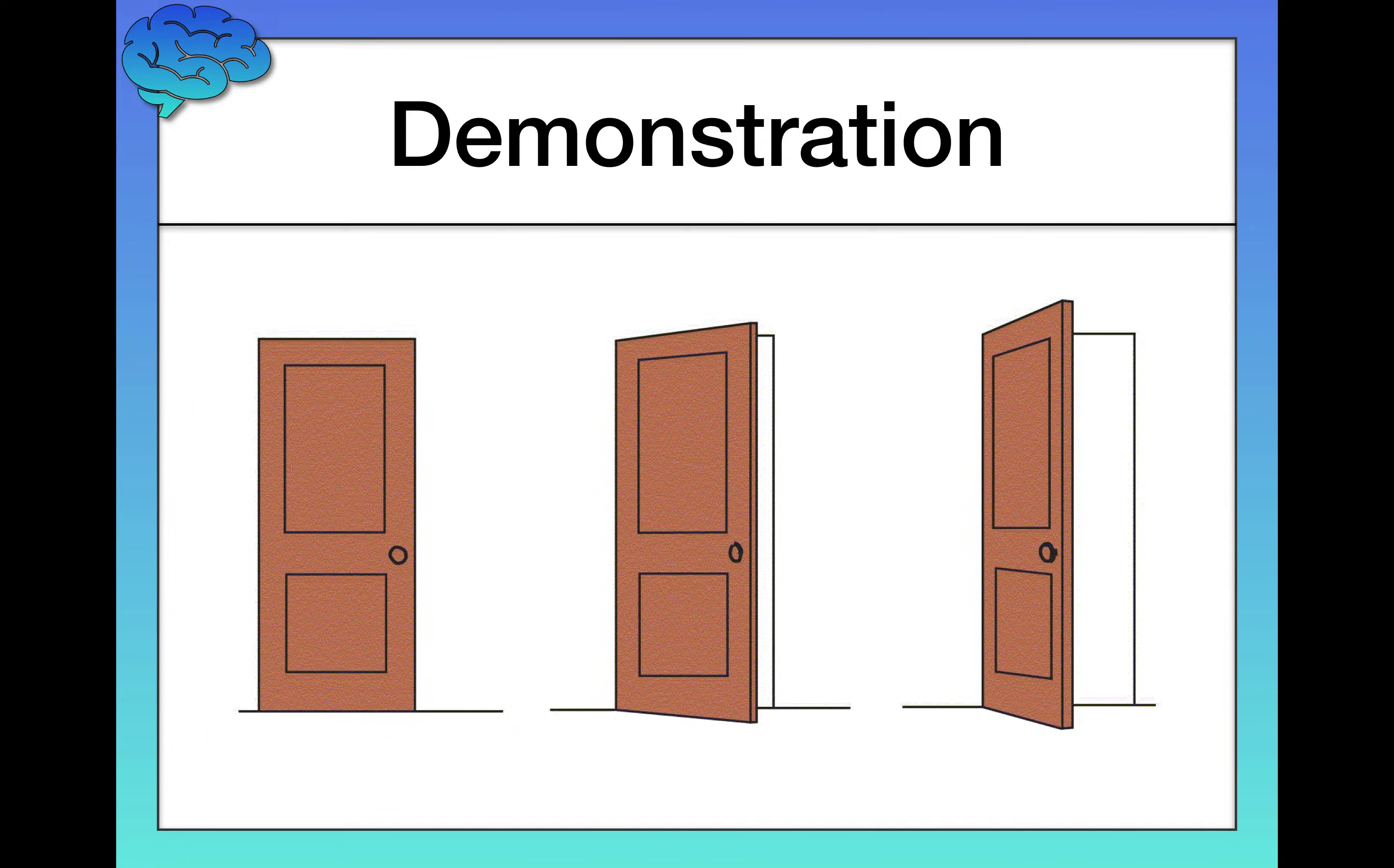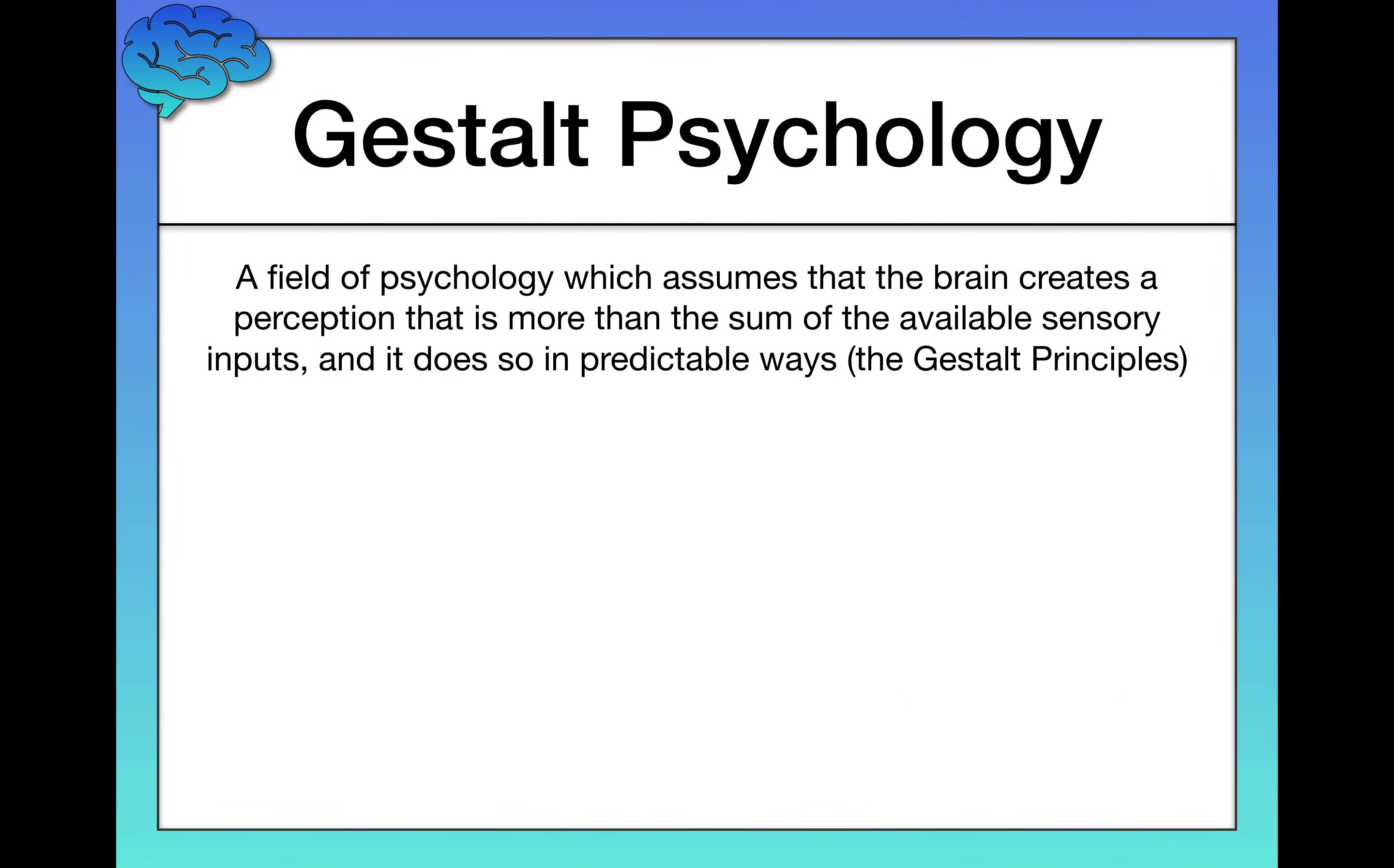All right. Let's shift gears to talk about the Gestalt principles. Gestalt psychology is a whole field of psychology that starts with the assumption that the brain creates a perception that is more than simply the sum of the available sensory inputs. So it's more than the sum of the parts you're given.